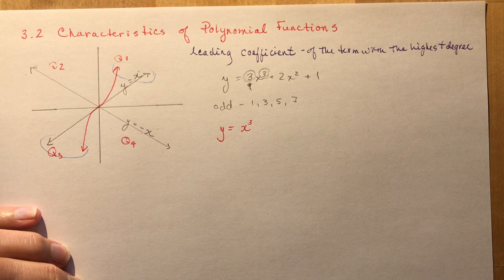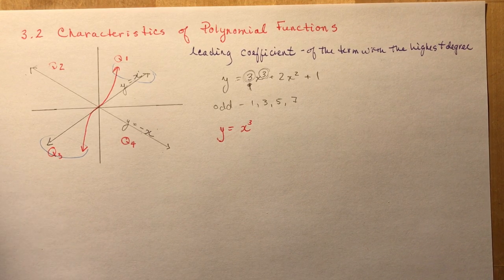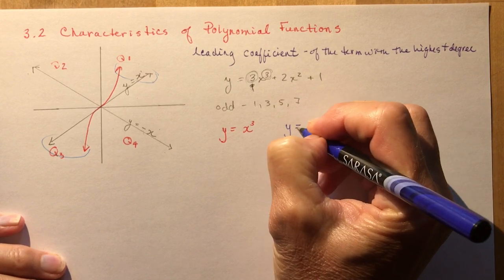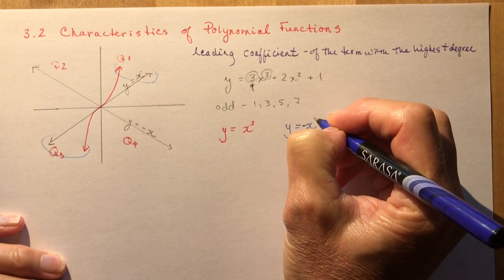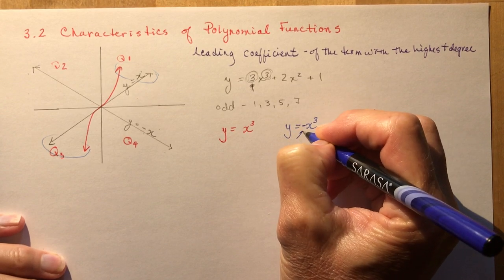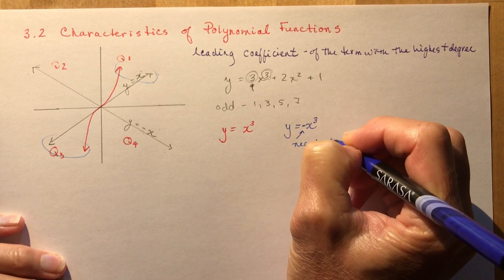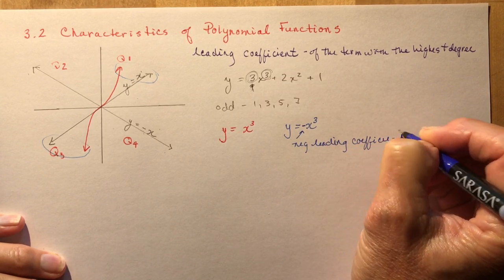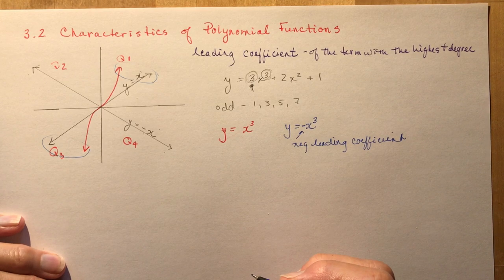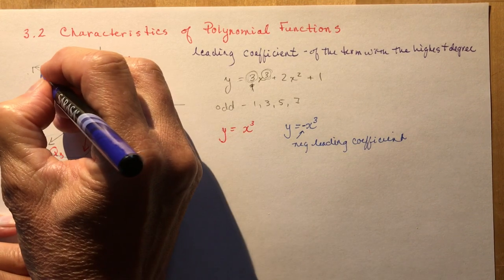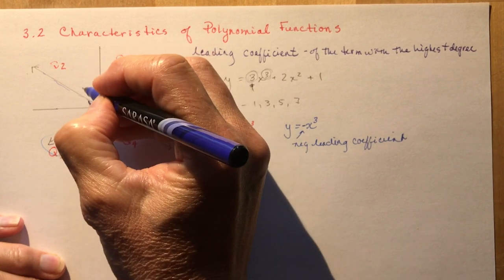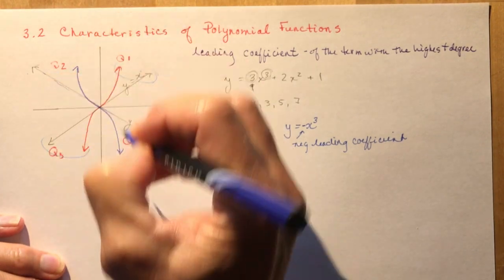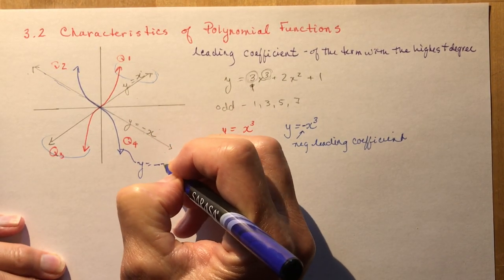Conversely, what if I have a negative leading coefficient? That would be this line here. So if my cubic function — let's say y = −x³, which has a negative leading coefficient — it's going to have the same end behavior and start and end in the same quadrants as a negative line. So it's going to start in Q2 and end in Q4. So this would be y = −x³.